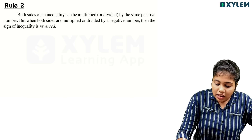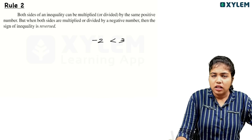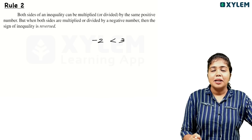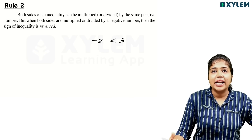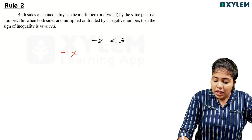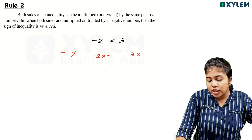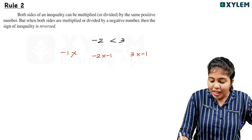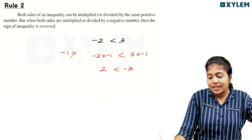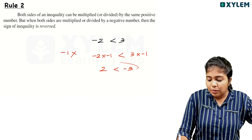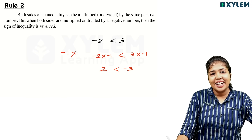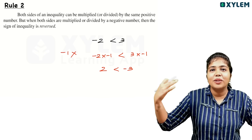We will talk about minus 2 less than 3 — this is a true statement. I will multiply both sides with a negative number. We will multiply by minus 1. Minus 2 into minus 1 is equal to 2. And 3 into minus 1 is equal to minus 3. So 2 is compared to minus 3. Now minus 2 and minus 3 — 2 is greater than minus 3.